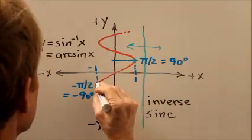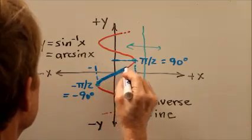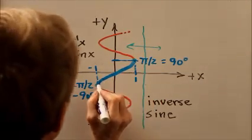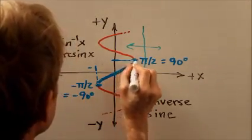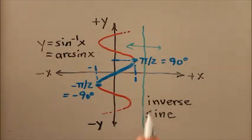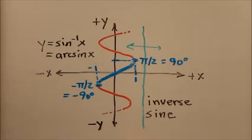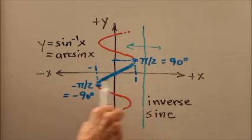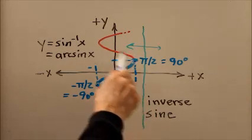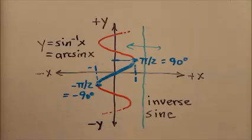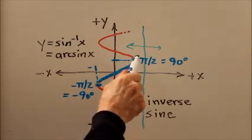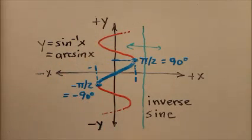Now if we restrict the function to just the values between and including these two points, then it passes the vertical line test, as you can imagine by sweeping that green line back and forth. But we can't include any more points than that above here or below there without creating a conflict somewhere.